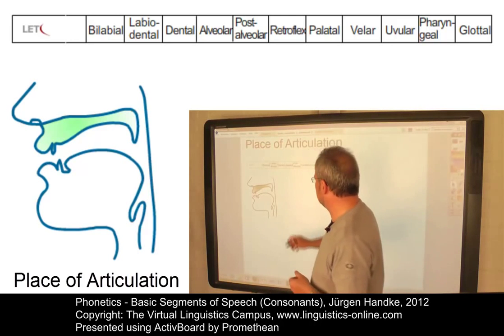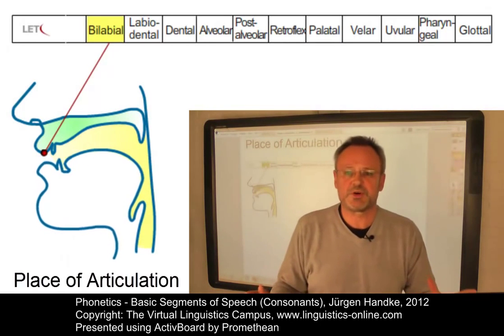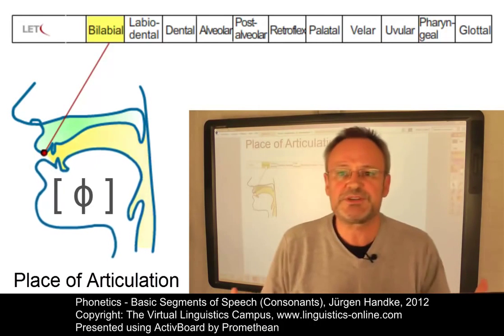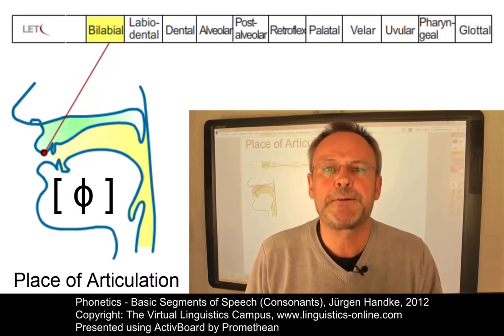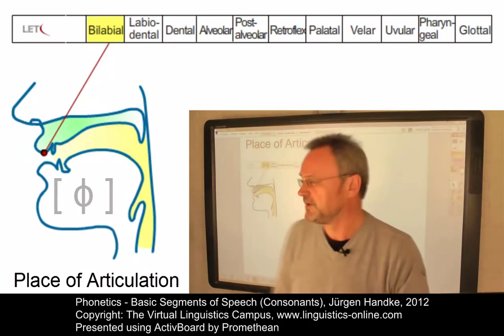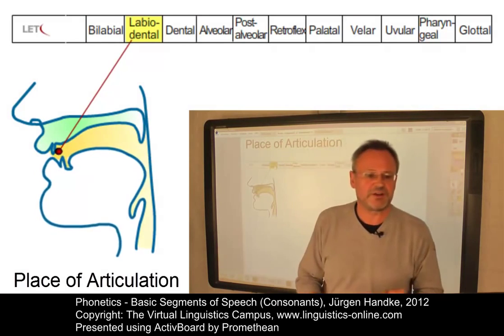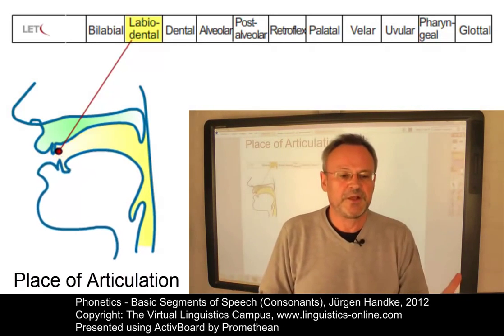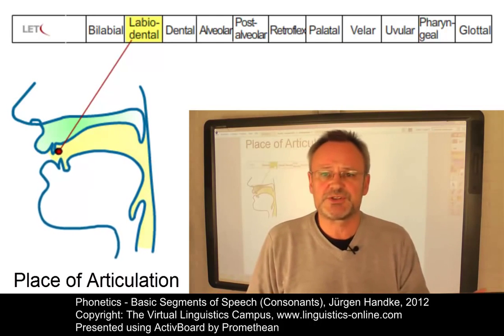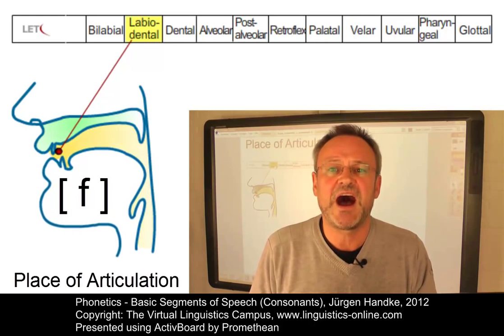Let's start with bilabial consonants, where we can observe a constriction between the lips. The result would be something like a-fa. The next place of articulation is the labiodental, where we observe a constriction between the lower lip and the upper teeth. A typical consonant would be a-fa.